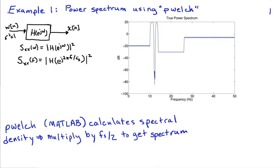Now pwelch in MATLAB calculates spectral density. So to get the power spectrum, we're going to multiply the results of pwelch by the sampling frequency divided by two. And it's a sampling frequency divided by two in this case, because I've used pwelch to calculate the one-sided power spectrum, or the one-sided spectral density, that is. That's just a normalization issue.